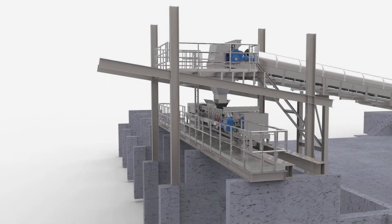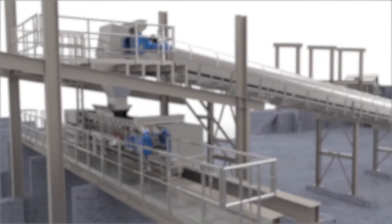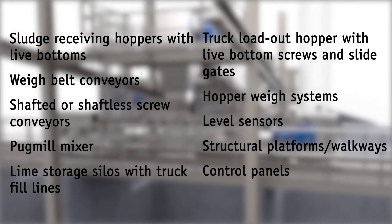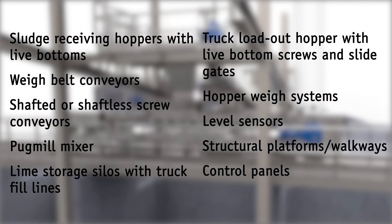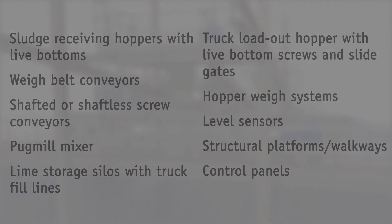JMS biostabilization systems can include some or all of the following equipment: sludge receiving hoppers with live bottoms, weigh belt conveyors, shafted or shaftless screw conveyors, plug mill mixer, lime storage silos with truck fill lines, truck loadout hopper with live bottom screws and slide gates, hopper weigh systems, level sensors, structural platforms and walkways, and control panels.